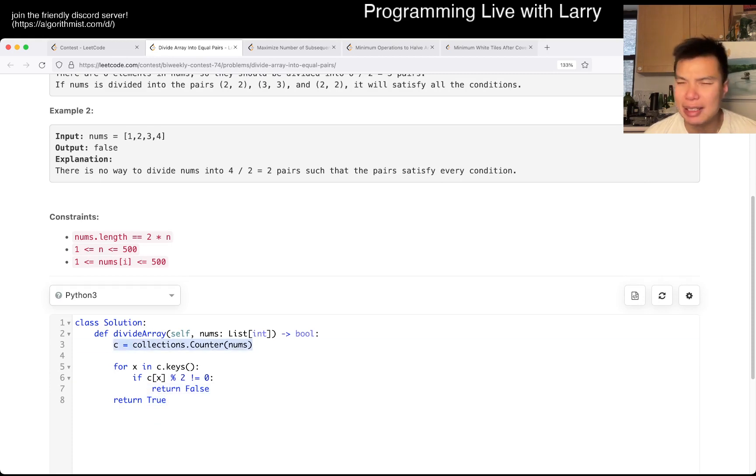This is going to be linear time at least because you have to look at each element once, and it's also going to be linear space because this lookup table - you could have n distinct numbers and that'll be linear space. And this is obviously linear time as well.